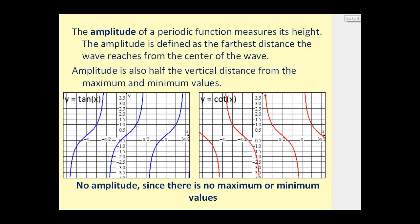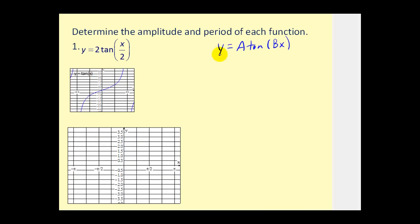The amplitude of a periodic function measures its height — it's the farthest distance the wave reaches from the center. However, since tangent and cotangent don't have maximums or minimums because they continue up and down forever, there is no amplitude. In the equation form, b affects the period, and even though tangent doesn't have an amplitude, the value of a will affect the graph slightly.